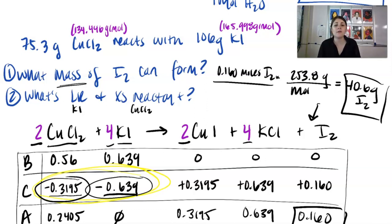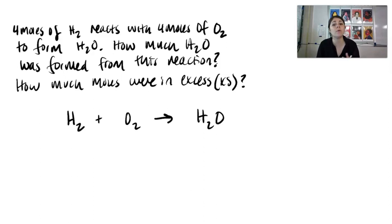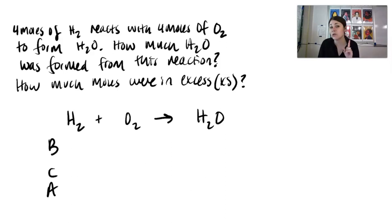A lot of this takes practice. I'm going to put up a quick problem for you to try on your own. This next problem will be quicker — pause the video and try it. The question asks: 4 moles of H₂ reacts with 4 moles of O₂ to form H₂O. How much H₂O was formed? And how many moles were in excess? Set up your BCA table — it doesn't need to be perfectly drawn. Make sure you do the first and most important step: balance.